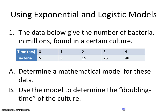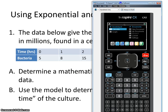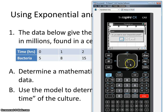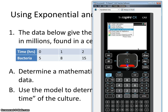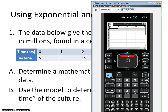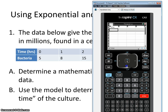Let me go ahead and bring out my calculator. On your calculator, we're going to go ahead and do a new document. I will not save this document. I'm going to add a list and spreadsheet. Go up to A, hit enter, and I'm going to type in 'time.' Enter, and I'm going to put in our data for time.